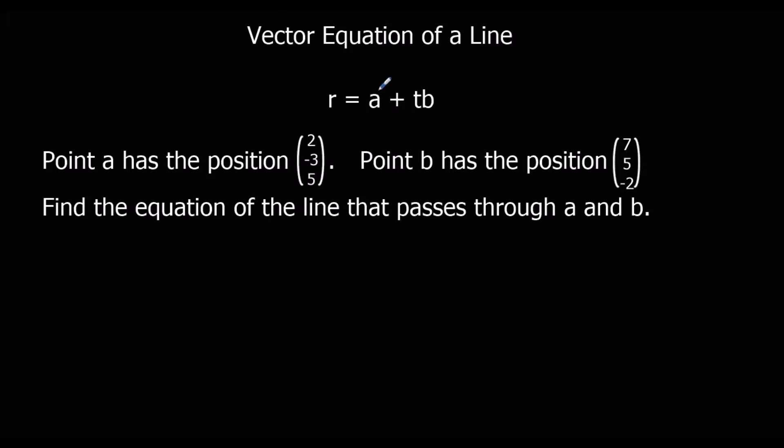And that is given by a, which can be a starting position, so it can be any point on the line. So the position is given by any point on the line plus a multiplier t, which is just a variable that can change, times the direction of travel.